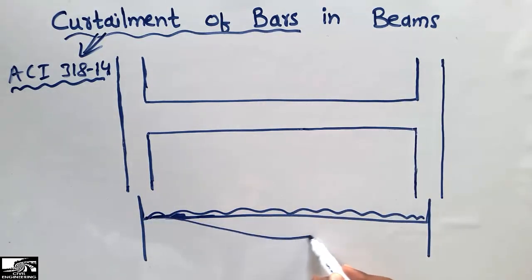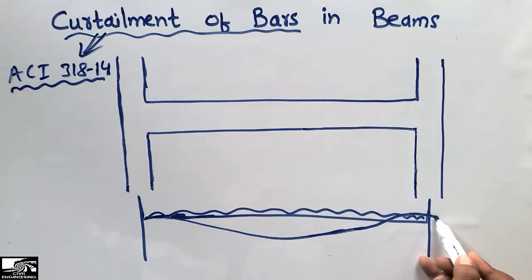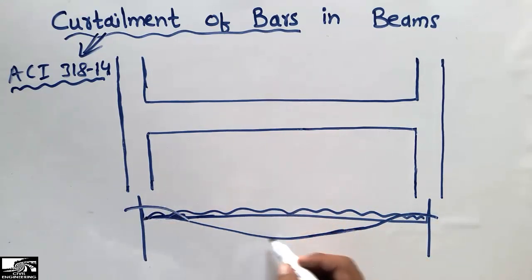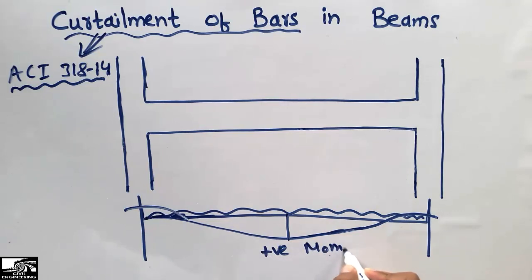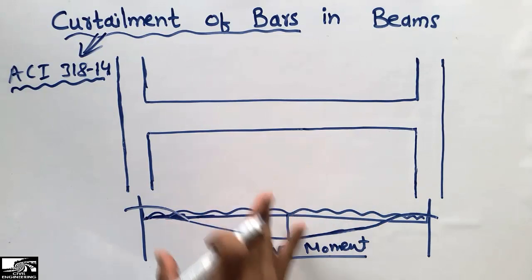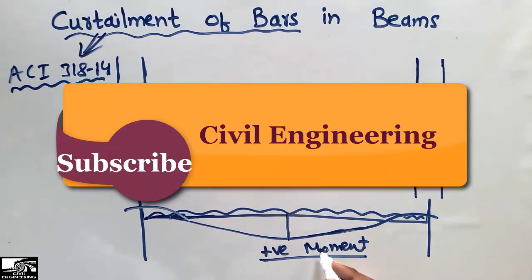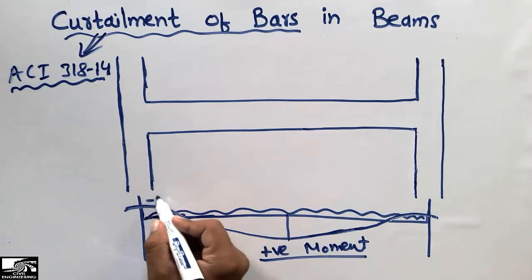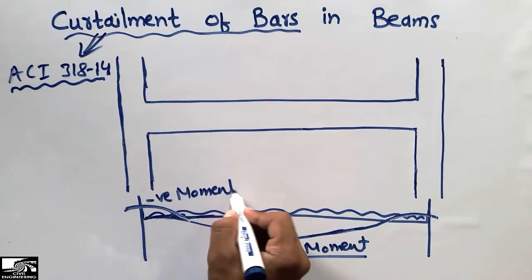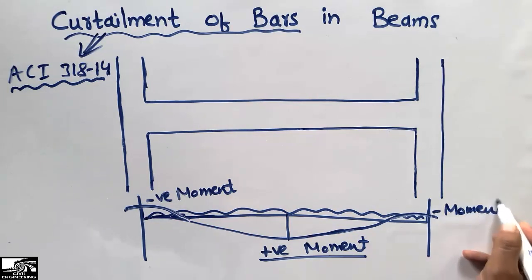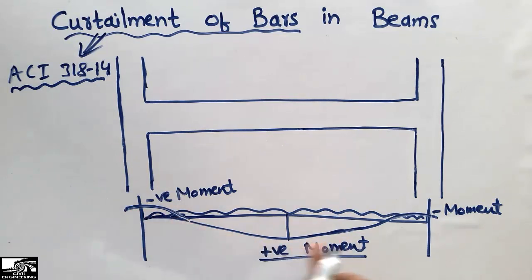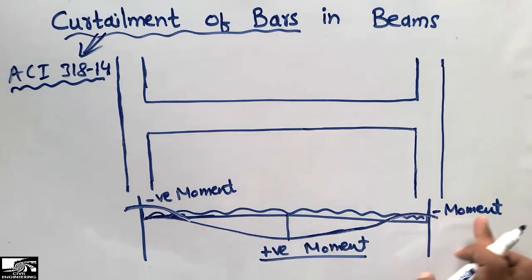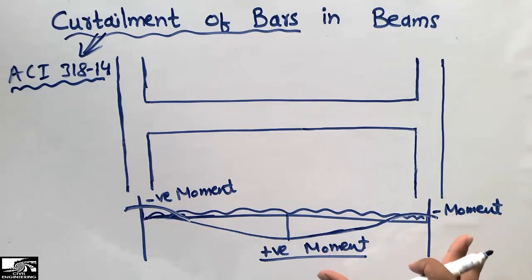Upon loading, this beam will show deflection, and the maximum deflection will be at the midpoint of the beam. You will see that there is a positive moment at the midpoint — the maximum positive moment occurs at the midpoint. At the supports, there is a negative moment occurring at the ends of the beam near the columns, because the beam bends in that way. So positive moment is at the mid and negative moment at the sides — this is the general overview of the moment diagram.